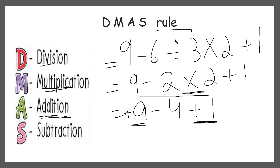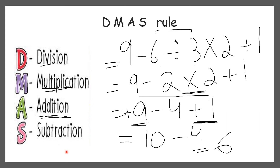So we should add the numbers with plus signs: 9 plus 1 is 10. Then we subtract 4 from 10, which is 6. So 6 is the right answer. This is how we solve questions with multiple operations using the DMAS rule. The answers we got before when we solved the question without an order were wrong. So 6 is the correct answer.